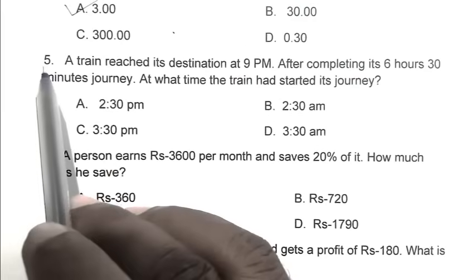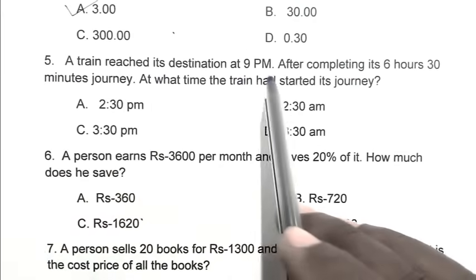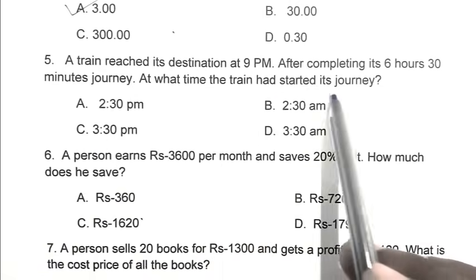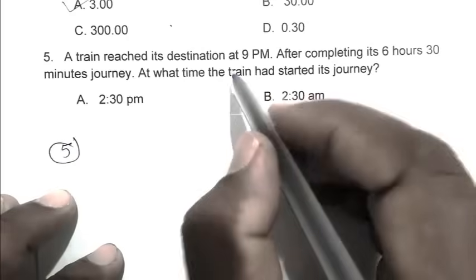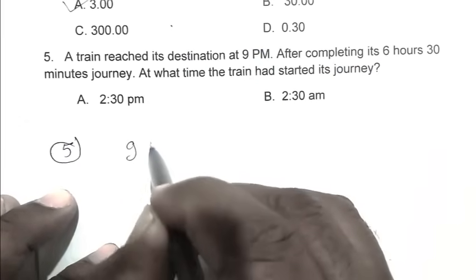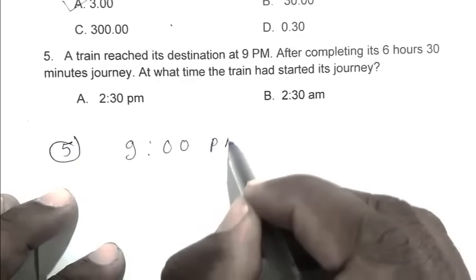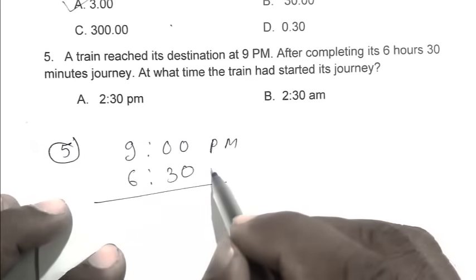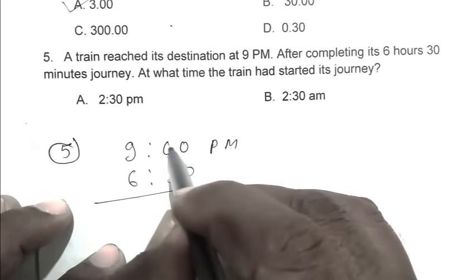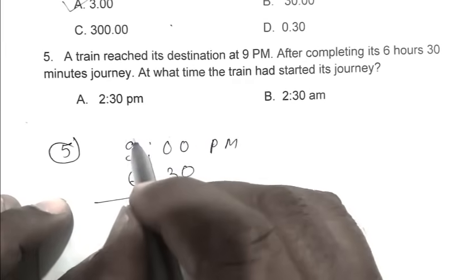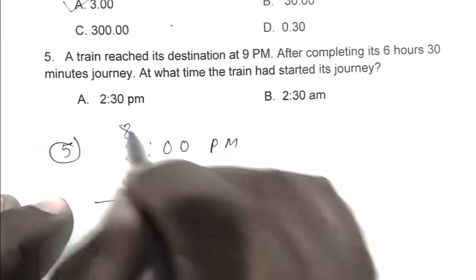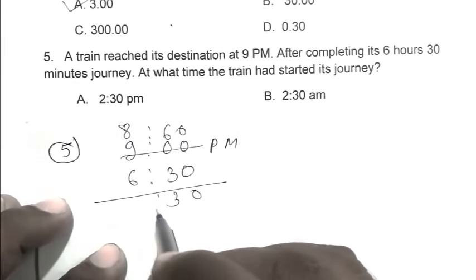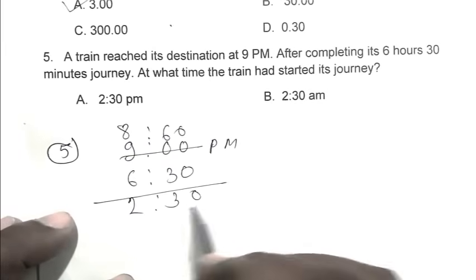Question number five: a train reached its destination at 9 PM after completing its 6 hour 30 minutes journey. At what time the train had started its journey? So the train reaches at 9:00 PM. We have to subtract 6 hour 30 minutes. We transfer one hour to minute side, so it becomes 8 hour 60 minutes. Subtracting gives us 2:30 PM. So A is the right answer.